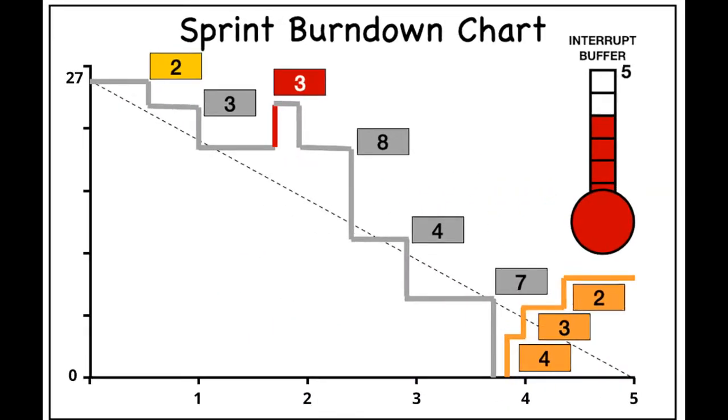On a sprint level, the burndown chart is a graphic representation showing the rate at which work is completed and how much work remains to be done in order to meet the sprint goal. They are especially helpful when your sprint backlog includes many different sized backlog items by providing real-time updates on the team's progress.